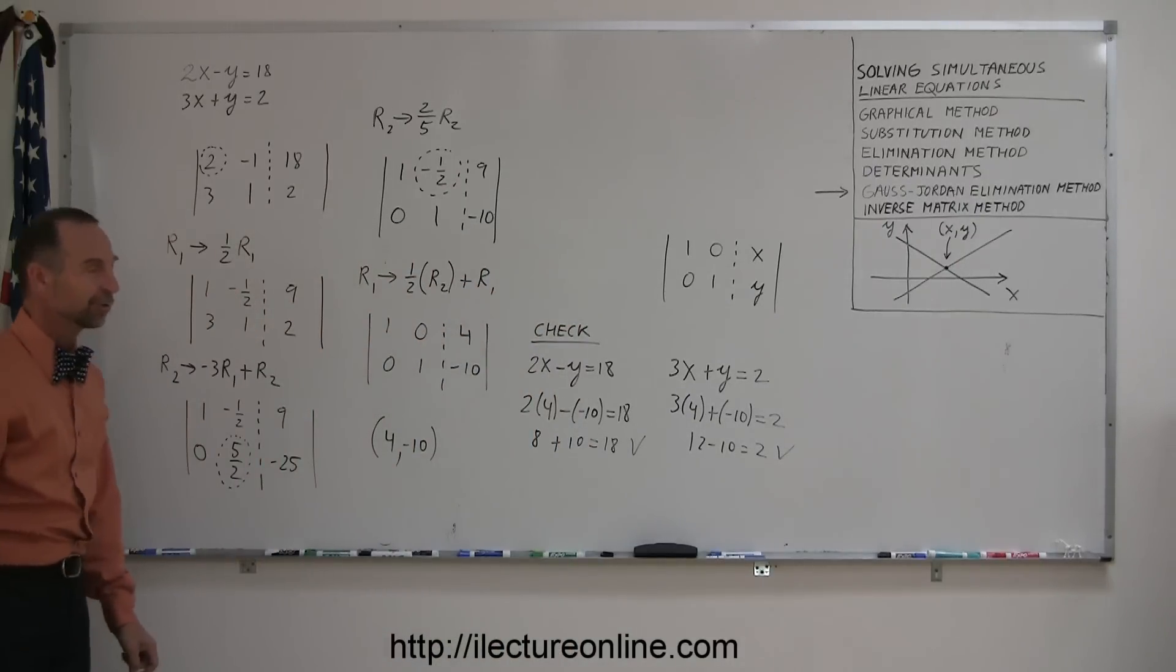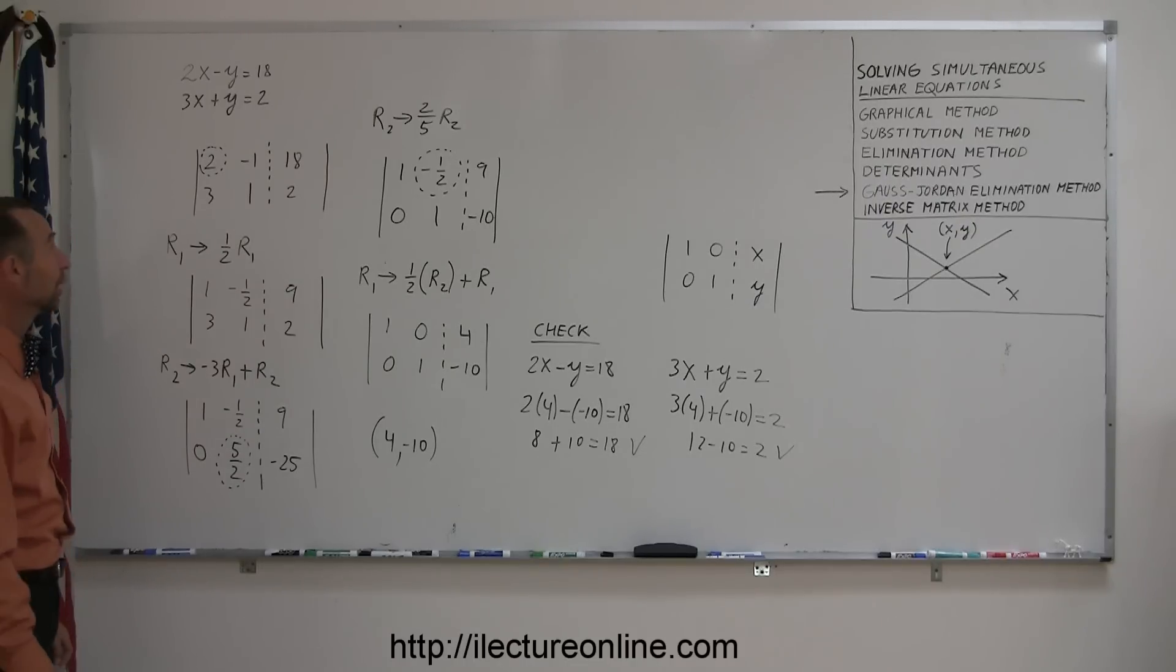So there's the interesting method of the Gauss-Jordan elimination method to solve for the x and y value of the point where the two lines cross.